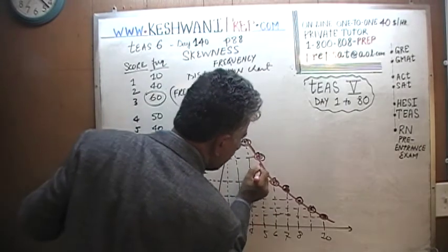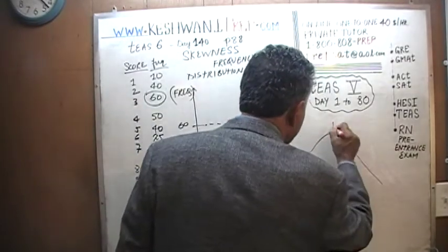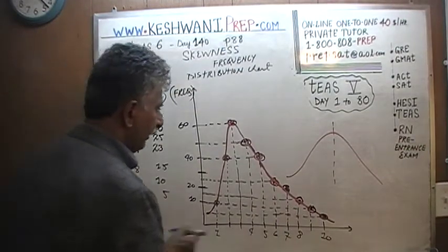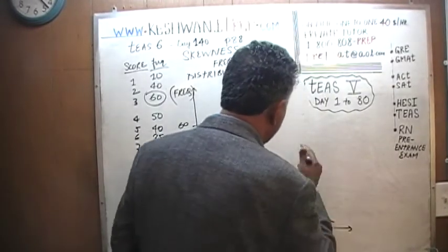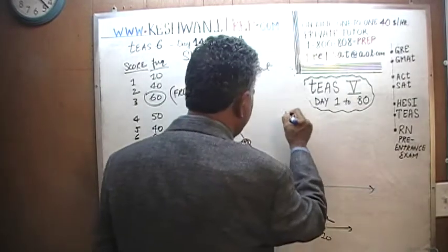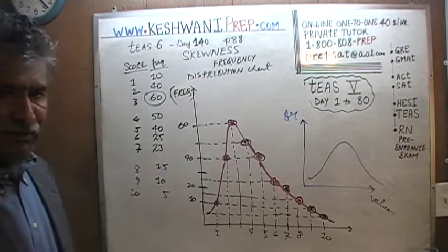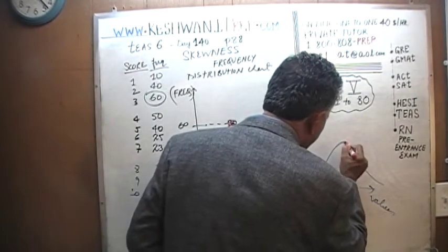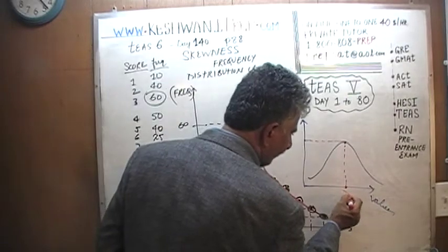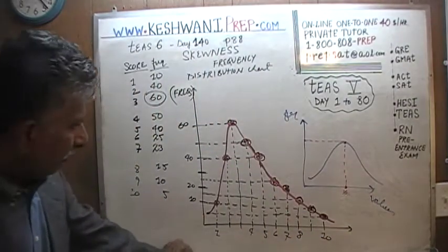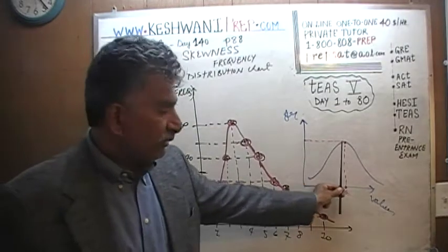The peak is not centered, which is what we expect to see in a normal distribution. A normal distribution looks like this: the peak is centered, you have your frequency on the y-axis and your values on the x-axis, and the normal distribution is very symmetric. Whatever the mode is — the value that appears most often — we have an equal number of observations to the left of the peak as to the right of the peak.